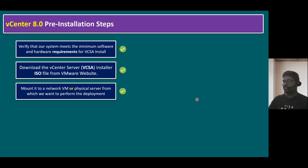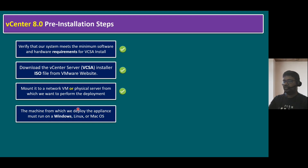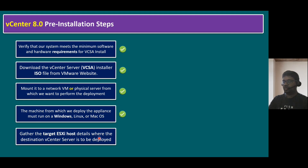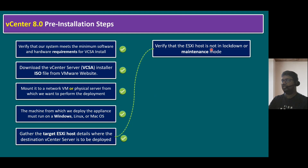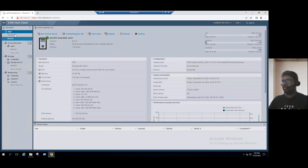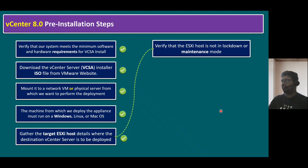The machine from which we deploy the appliance must run Windows, Linux, or Mac OS. In our lab, we are using Windows. We're planning to use ESXi 01 to install our vCenter server. Also verify that the ESXi host is not in maintenance mode. When we log in to our lab host, we can see it is in a normal connected state — not in maintenance mode — though it is not yet connected to any vCenter.